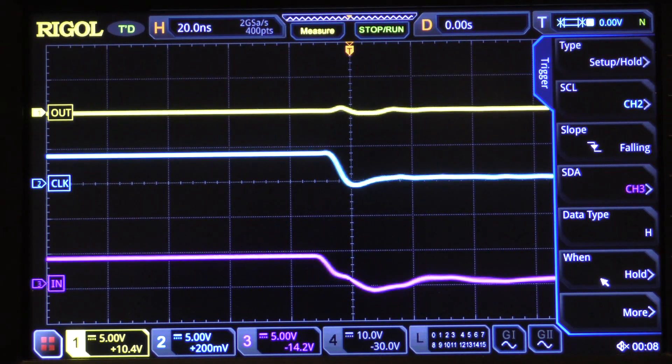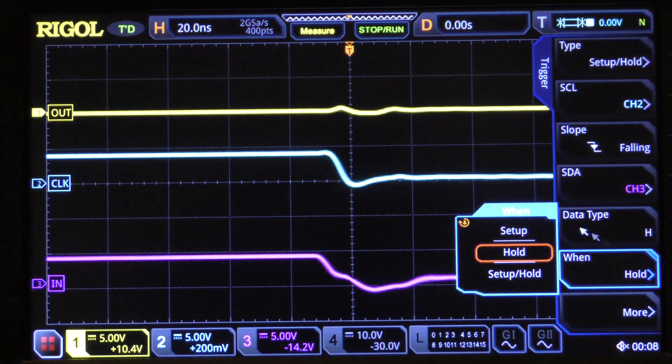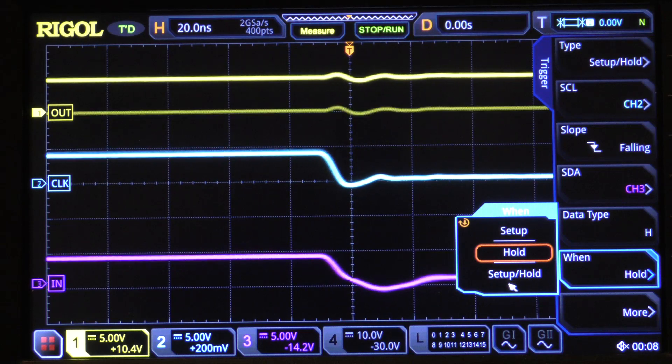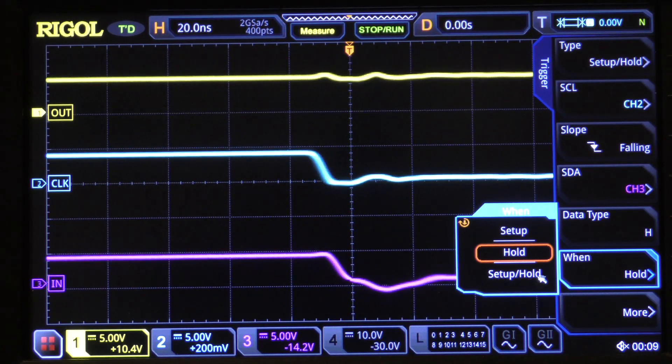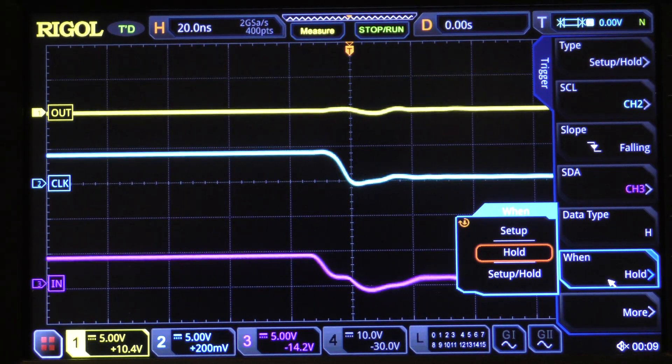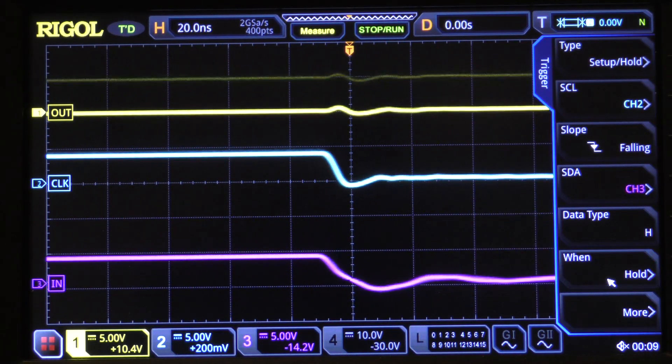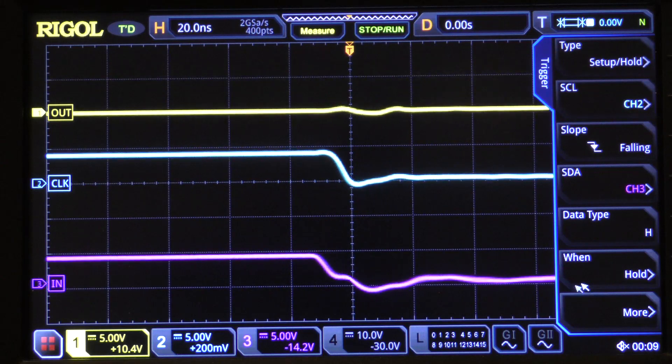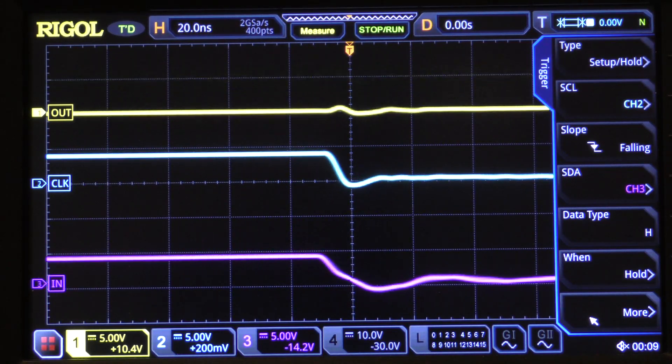Then we come down to the when box and notice that we have three choices: setup, hold, or setup or hold, in other words both. We're set up for a hold violation. We're looking for a hold violation. Now you might look for a setup violation under another set of circumstances. Now that we have set it's a hold violation we'll look for, we then click more.